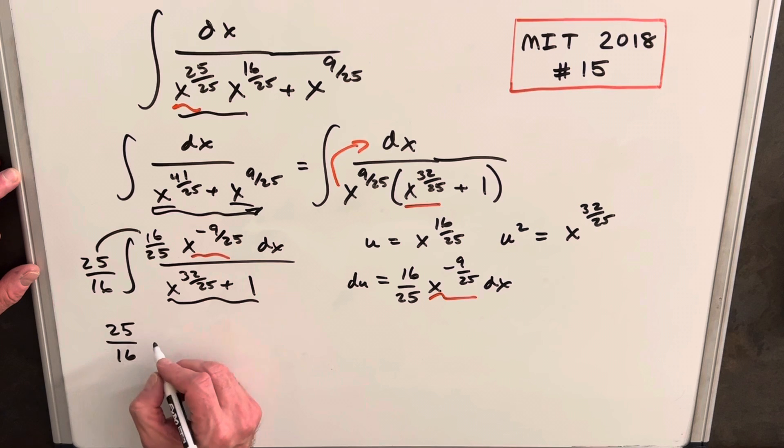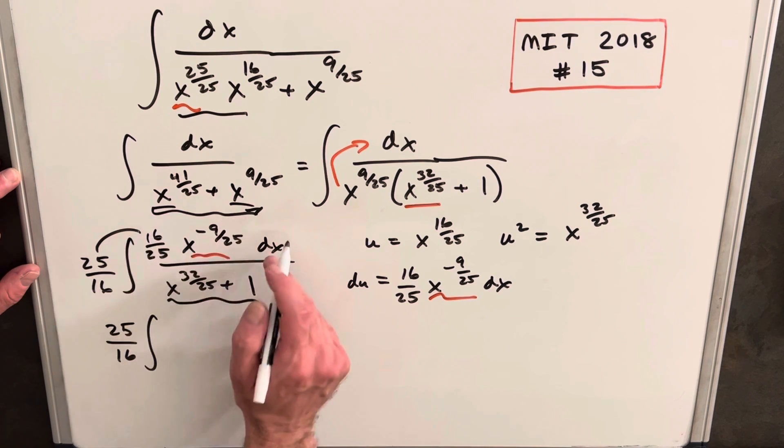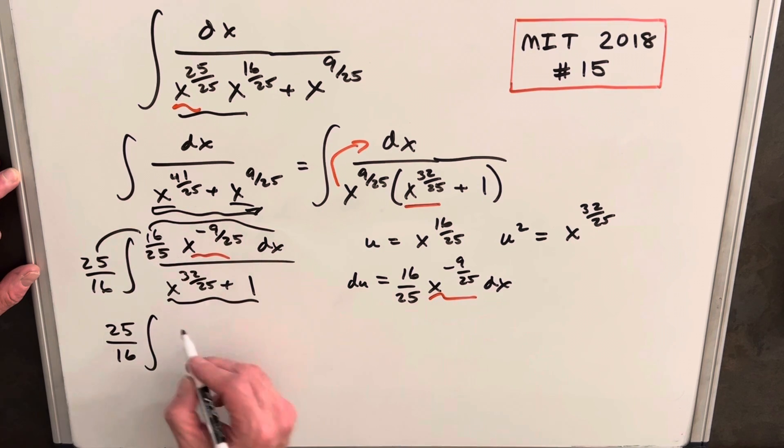We're going to have 25 over 16 integral of the whole numerator now being du, so we're going to have du over u squared plus 1.